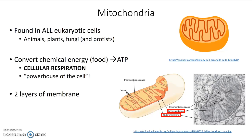Another thing to know about mitochondria is that they actually do appear orangey brown. So when we take tissue samples that have a lot of mitochondria — and certain tissues have more mitochondria than others — those tissues actually tend to have a slightly orangey brown color. This is one of the organelles that actually does have the color that the textbook shows.